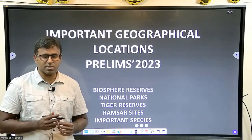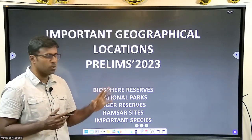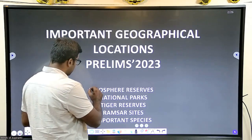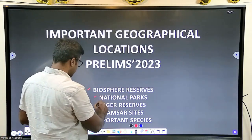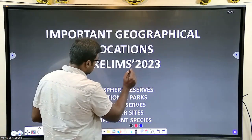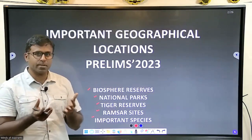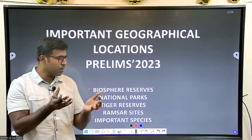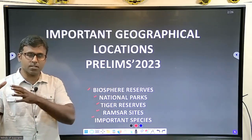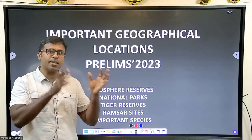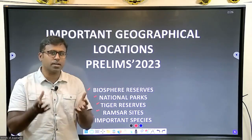Hello friends. We've been covering the economic survey series, and I thought of making this important geographical location video. Many of you asked about important biospheres and how to study biospheres, national parks, tiger reserves, Ramsar sites, and important species. It's a vast syllabus — we have to look at the whole perspective of how these national parks are located and their connection to previous year questions. Looking at species in isolation means we'll always forget them.